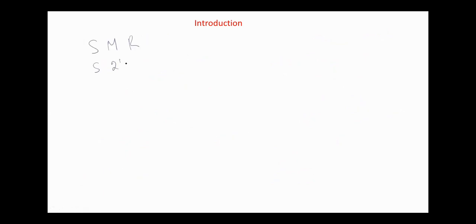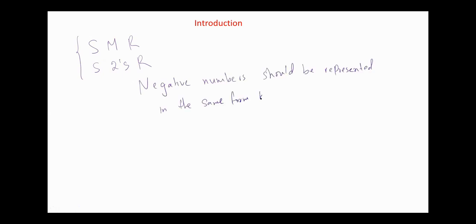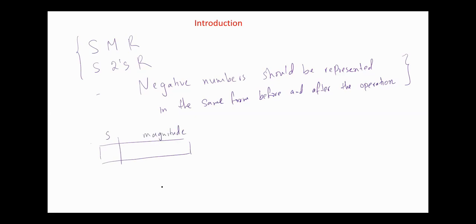In this video, we are going to discuss addition and subtraction. The numbers should be represented in the same form before and after the operation. In both cases, there is a bit allocated for the sign and the other bits are for the magnitude. In sign-magnitude representation, the sign bit should be separated from the magnitude since we need it for processing. But in 2's complement representation, the sign is part of the register and it will be processed as all the other bits in the register.